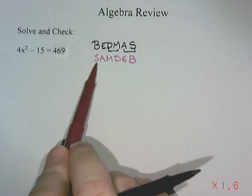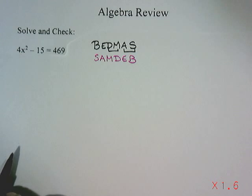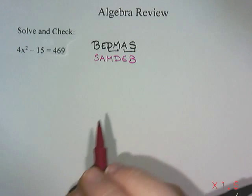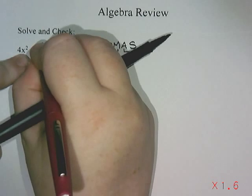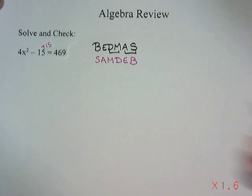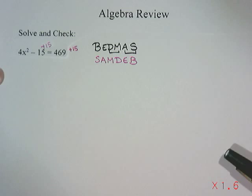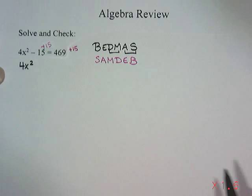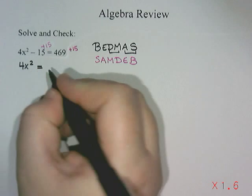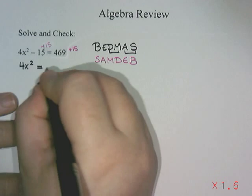I start with subtraction and addition. I notice I have a subtract 15, so that's the first thing to get rid of. To cancel out a minus 15, I do the opposite and add 15. Whatever you do to one side, you do to the other — so adding 15 to both sides. Negative 15 plus 15 cancel out, leaving 4x squared, and 469 plus 15 is 484.